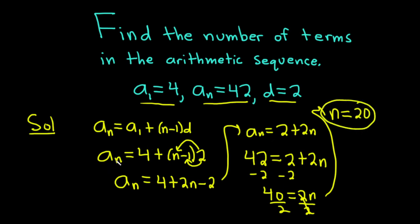We could have plugged it in right away, but I wanted to simplify it first a little bit before plugging it in. But you can plug everything in right away. You can put the 42 here, you can put the 4 here plus n minus 1 times 2. Just plug it all into the formula and then solve for n like we did here and that will give you the answer.